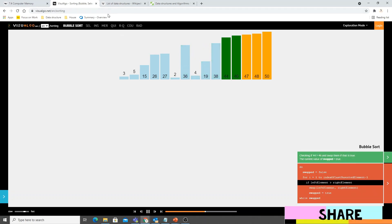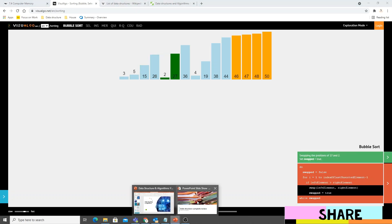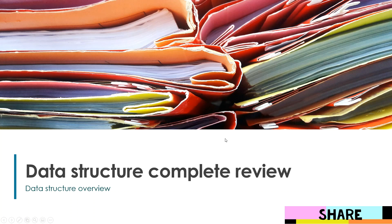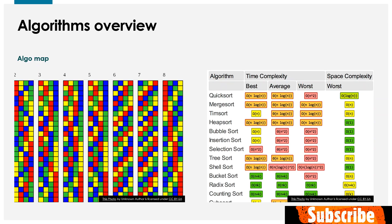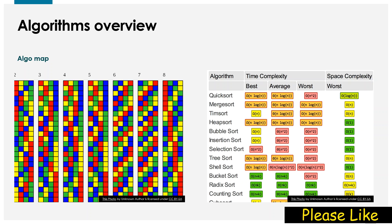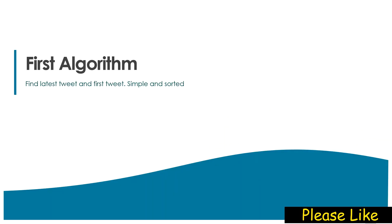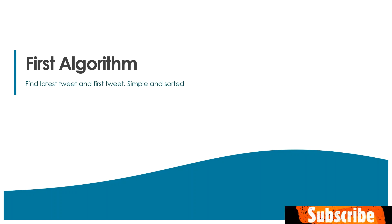I will be talking about this a lot. So to summarize, this is what I will be covering in this series — algorithms overview, all those algorithms, and also tree and graph related algorithms. Now let's start with a fun question. Find the latest tweet and first tweet of a user. Let's say you have a user and you want to find the latest tweet and the first tweet. How will you do it?